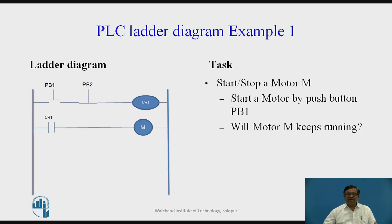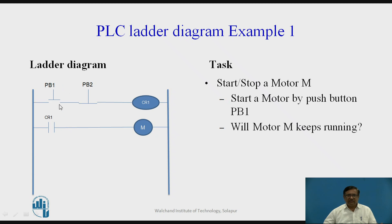Let us go to example 1 — ladder diagram example 1. Our aim is a simple ladder diagram: we have a motor and we want to turn this motor ON using push button 1 and turn it OFF using push button 2. The task is start/stop a motor M — start the motor using PB1 and stop the motor using PB2. PB1 is normally open, PB2 is normally closed, and there is a contact relay CR1.